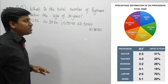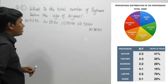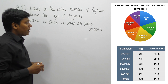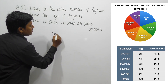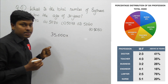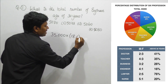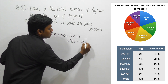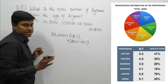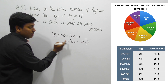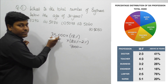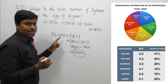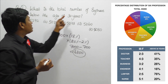Question number 1: What is the total number of engineers below the age of 30 years? We know the total is 35,000 people. Engineers are 18% of that. Using the trick: 20% minus 2% — 10% of 35,000 is 3,500, so 20% is 7,000; 1% is 350, so 2% is 700. Therefore, 7,000 minus 700 = 6,300 engineers in total.